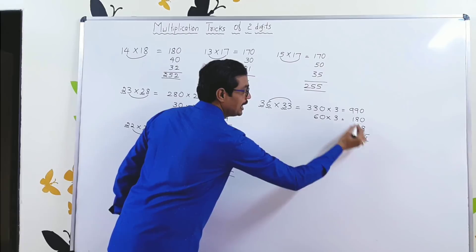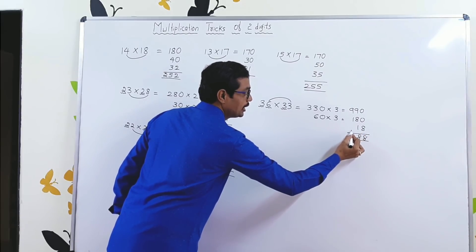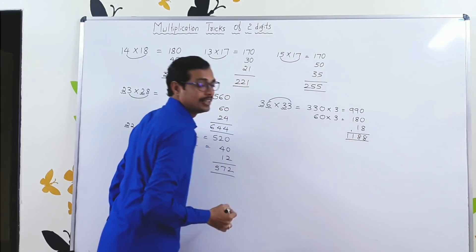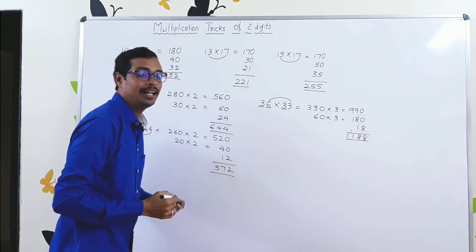990, 180. 6 × 3 is 18. So, please make the total. 8. 18 carries 1. 9 plus 2 is 11. So, your answer, 1188.